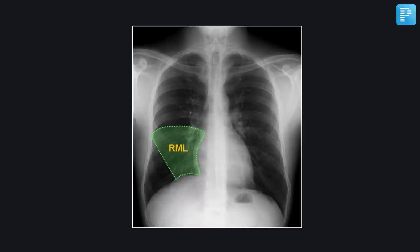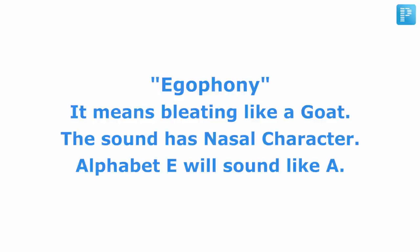An additional finding heard in patients of lobar pneumonia is called egophony. 'Ego' here refers not to the ego we have but to a goat — there is distortion of vowel sounds, making them appear more nasal in character, such that the letter E sounds like the letter A, like the bleating of a goat.